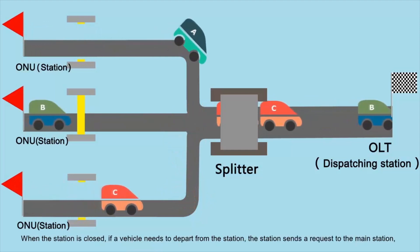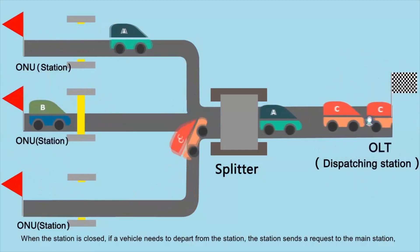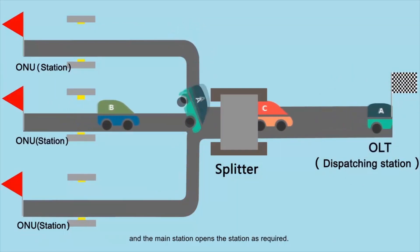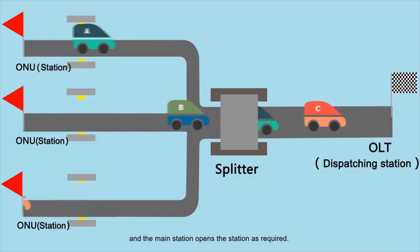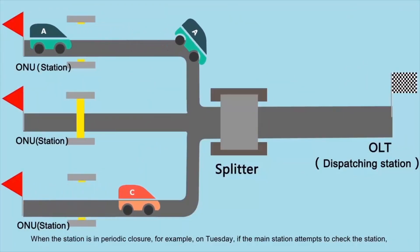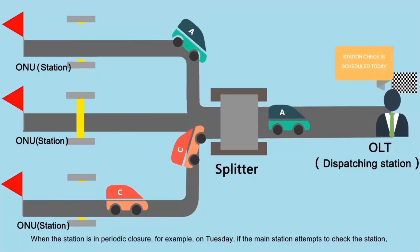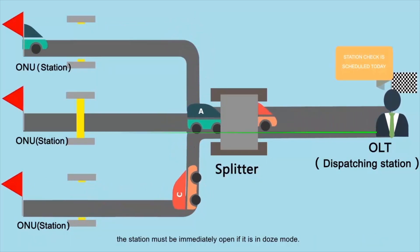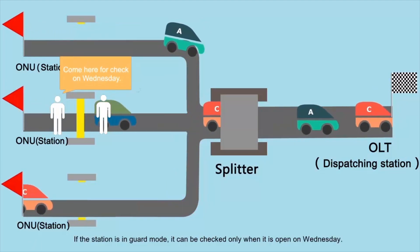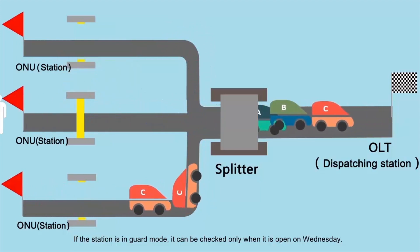When the station is closed and a vehicle needs to depart, the station sends a request to the main station, and the main station opens the station as required. When the station is in periodic closure — for example, on Tuesday — if the main station attempts to check the station, the station must be immediately open if it is in Dose Mode. If the station is in Guard Mode, it can be checked only when it is open on Wednesday.